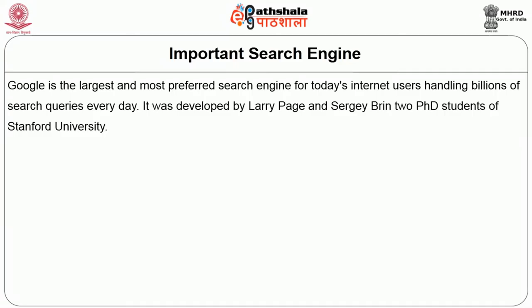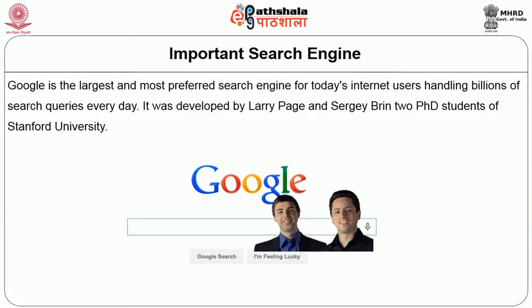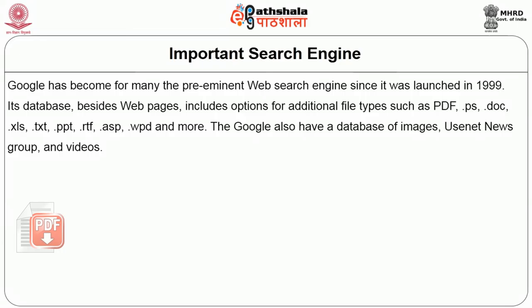Google was developed by Larry Page and Sergei Brin, two PhD students at Stanford University. Google became the preeminent web search engine since its launch in 1999. Its database, besides web pages, includes options for additional file types such as PostScript, .doc, .xls, .txt, .ppt, .rtf, .asp, .wpd, and more. Google also has a database of images, Usenet newsgroups, and videos. Google supports Boolean searching, proximity searching, field searching, and limits to file type, language, domain, and character encoding.